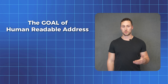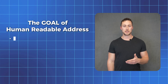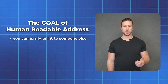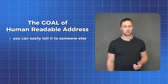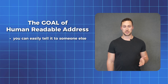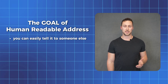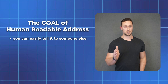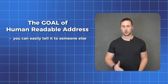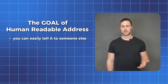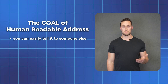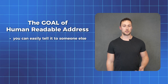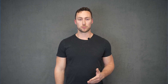The goal of creating a human-readable name is that you can easily tell it to someone else. For example, imagine if I wanted to tell you my address right now. I could tell you it was in the description of the video and you could copy and paste it, or maybe I could tell you there is a link to a QR code in the description, but it might just be easier if I could tell you what it was out loud in plain English. That's a human-readable name.